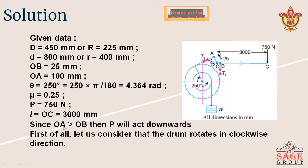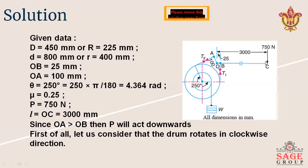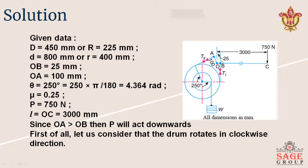Here you can see that since OA is greater than OB — OA is 100 mm and OB is 25 mm, that means 100 is greater than 25 — then P will act downwards. The direction of P depends on the values of OA and OB. If OA is less than OB, then P would act in the upward direction. In this case, OA is greater than OB, so P acts downward.